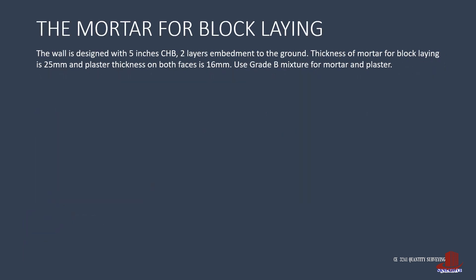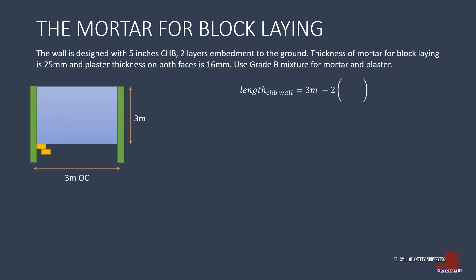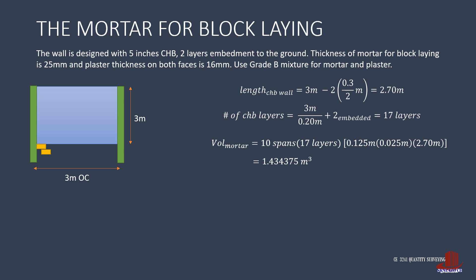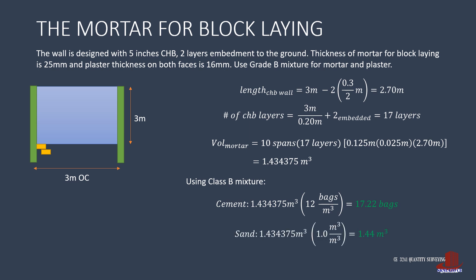Next is the mortar for block laying. The wall span is 2.7 meters. The number of CHB layers is the total height of 3 meters divided by the block height of 0.2 meters, plus 2 layers for embedment, giving 17 layers. The total volume of mortar for block laying is 10 spans times 17 layers, with dimensions of wall width 0.125 meters, mortar thickness of 1 inch or 0.025 meters, and wall length of 2.7 meters, resulting in 1.434375 cubic meters. With class B mixture: cement is 17.22 bags, and sand is 1.44 cubic meters.